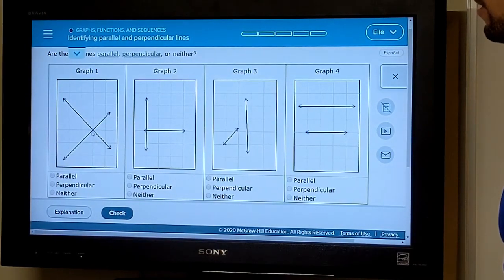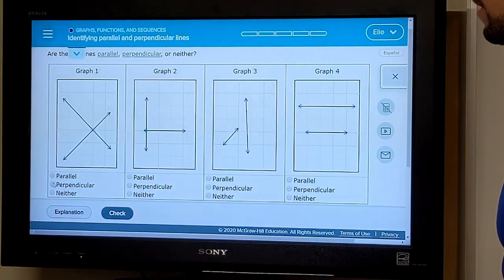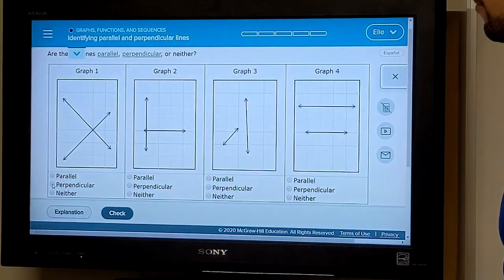And those are negative inverses of each other. So these, though we can't see an indication of a perpendicular symbol or right angle, are certainly perpendicular.